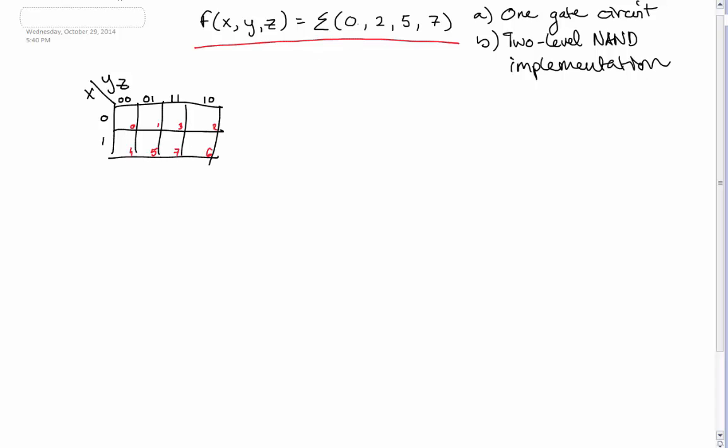Okay, so now we have spot 0. Spot 0, we'll have a 1 because this is a sigma, so this means that we're doing sum of products. So we have a 1 in spot 0, we have a 1 in spot 2, we have a 1 in spot 5, and we have a 1 in spot 7.